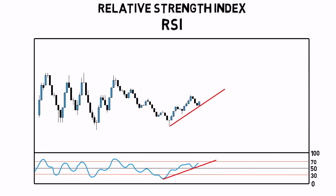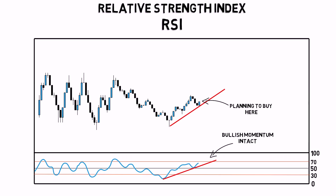The second way is to draw trendlines directly on the RSI to confirm the momentum of the price. For example, here we are planning to buy the bounce of the rising trendline. We see that the bullish momentum on the RSI is still intact, so it is an extra confirmation that our analysis is right.